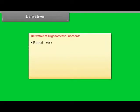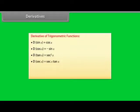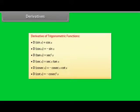Derivatives of trigonometric functions: differentiation of sin x = cos x; differentiation of cos x = −sin x; differentiation of tan x = sec²x; differentiation of sec x = sec x · tan x; differentiation of cosec x = −cosec x · cot x; differentiation of cot x = −cosec²x.